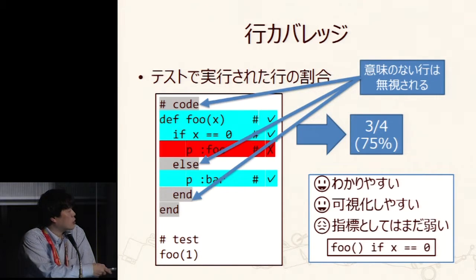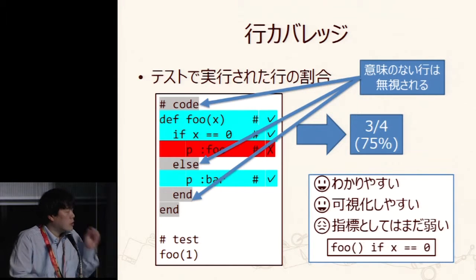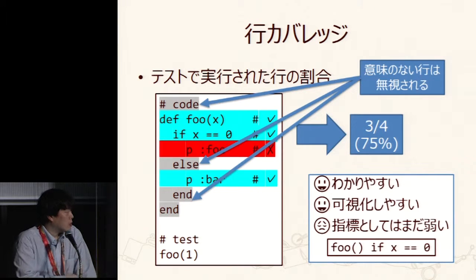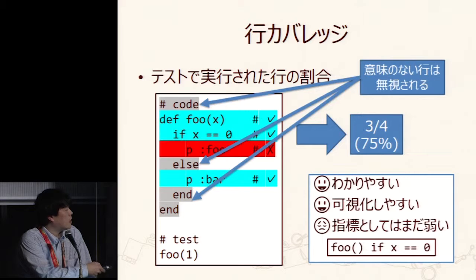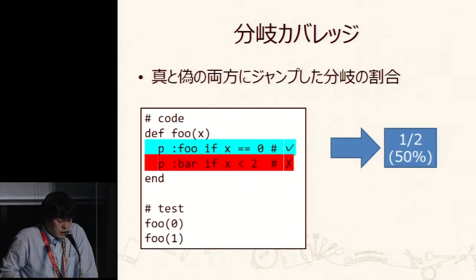In Ruby, statement coverage is very typical — it can be written in one line. If this line is executed, it will be counted as executed. So regardless of true or false, if this line is executed it is regarded as covered. That's the weakness of statement coverage.